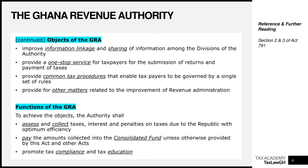The next objective was to provide a common tax procedure so that taxpayers are governed by a single set of rules. This is what the Revenue Administration Act, Act 915 of 2016, accomplishes — it is one umbrella act that governs the administration of all taxes in Ghana. The final objective was to provide for other matters related to the improvement of revenue administration in Ghana.